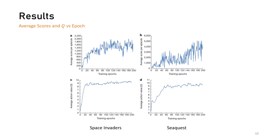Here are the changes in average score per episode and Q value compared to the number of epochs for Space Invaders and Seaquest games. The gradual increase in the graphs represents a converging training process.